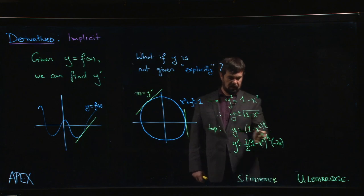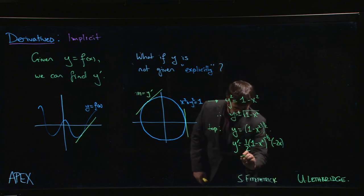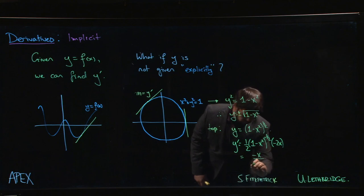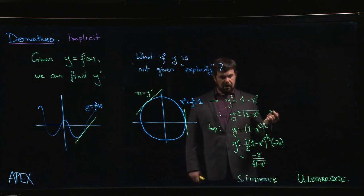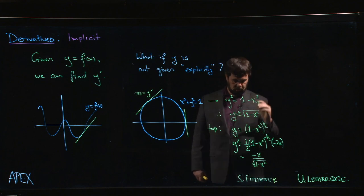Perhaps I choose to simplify. I can cancel some twos. I get -x over the square root of 1 minus x². And you might choose, knowing that the square root of 1-x² was y to begin with, to write this as -x/y.